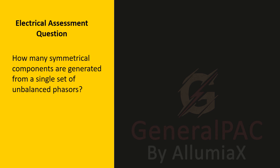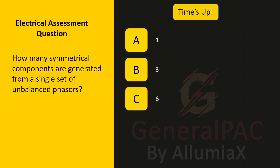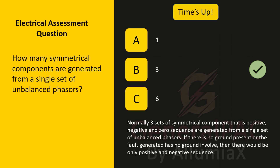How many symmetrical components are generated from a single set of unbalanced phasors? Is it one, three, or six? It is three. Three sets of symmetrical components — the positive, negative, and zero sequence — are generated from a single set of unbalanced phasors. If there's no ground present or the fault has no ground involved, then there would be only the positive and negative sequence.